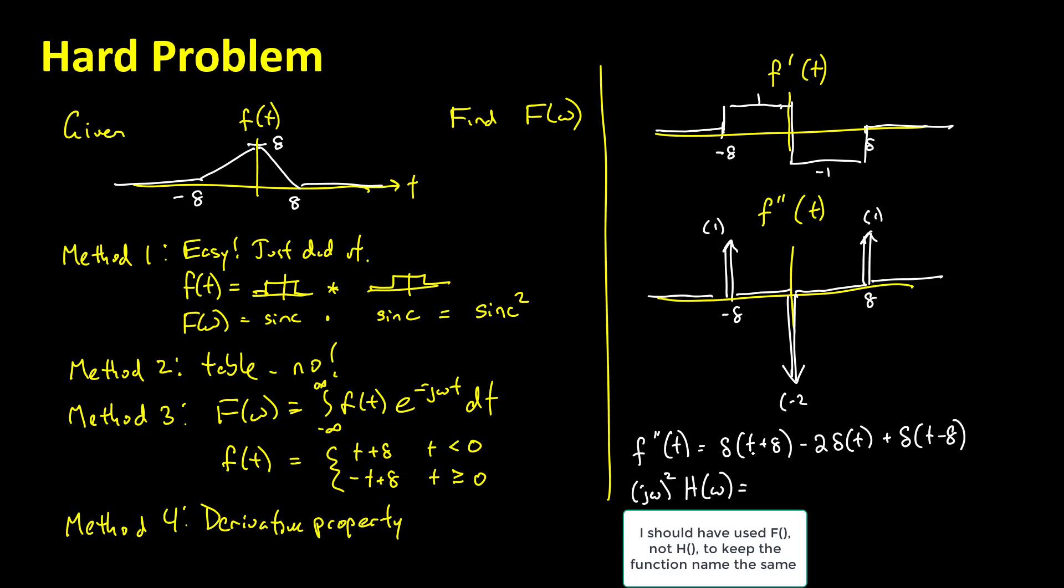So a double prime is like multiplying by j omega squared times h of omega. And the h of omega corresponding to these things, well, this is just a time-advanced impulse, and it's advanced by e to the j 8 omega. That's one of the first examples we did last class. This is minus 2. Again, the transform of an impulse is 1, and since it's been delayed by 8, we multiply it by e to the minus j 8 omega.